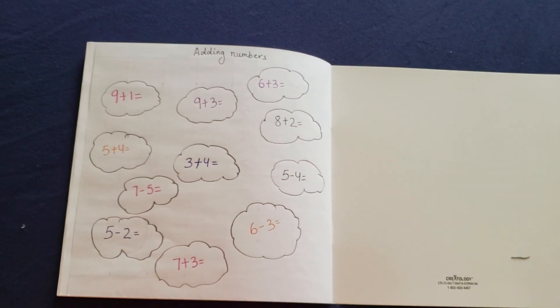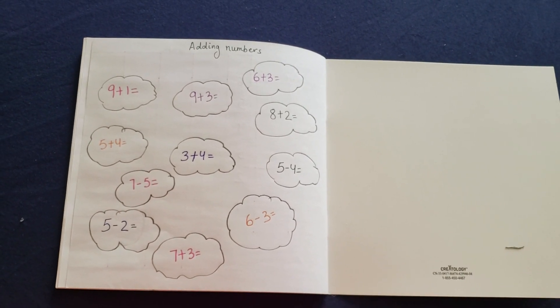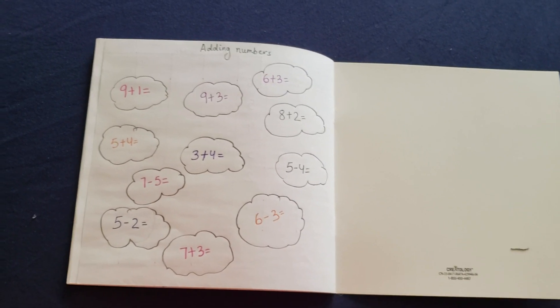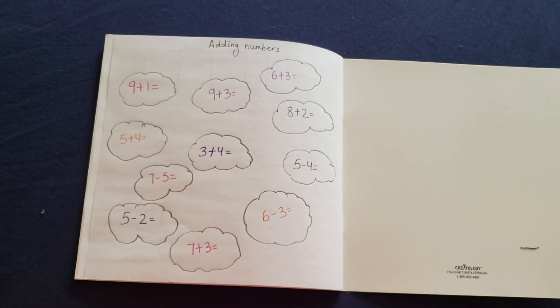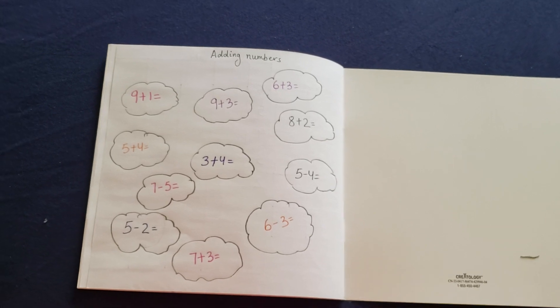And then you have random adding numbers, adding and subtraction numbers over the clouds. Basic simple activity with 9 plus 1, 9 plus 3, 8 plus 2, 3 plus 4, 7 minus 5, 6 minus 3 for her to do it.